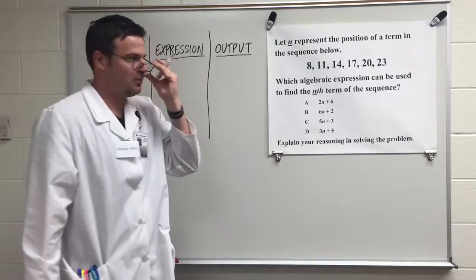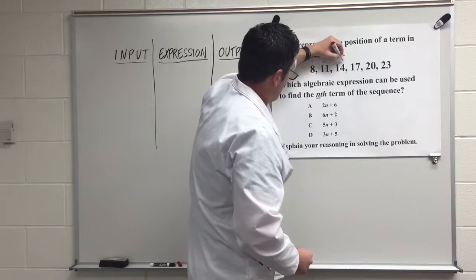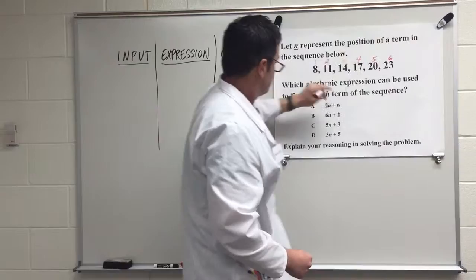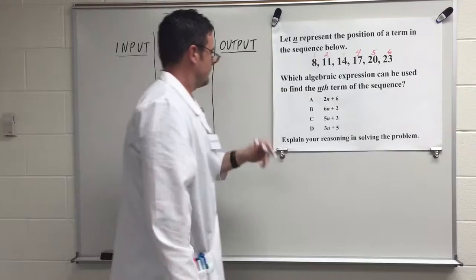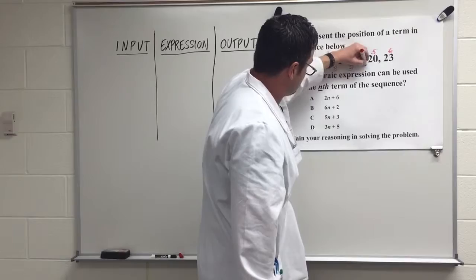Well, first I'm going to label each term. 1, 2, 3, 4, 5, 6. 8 is my first term, 11 is my second term, and so on. I see a relationship each time. They're growing by 3. They're being increased by 3 each time. That tells me something.